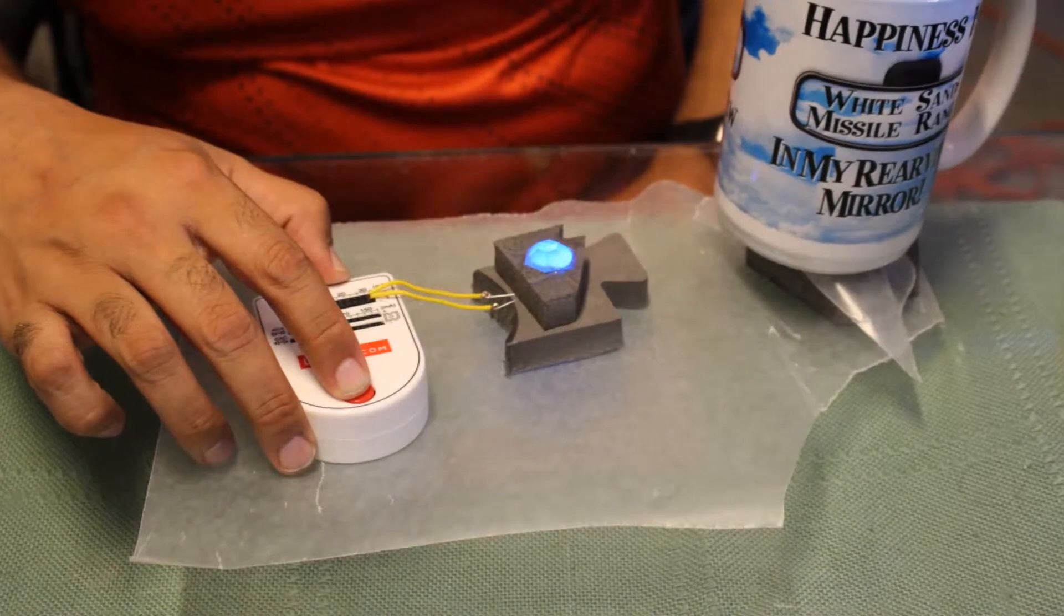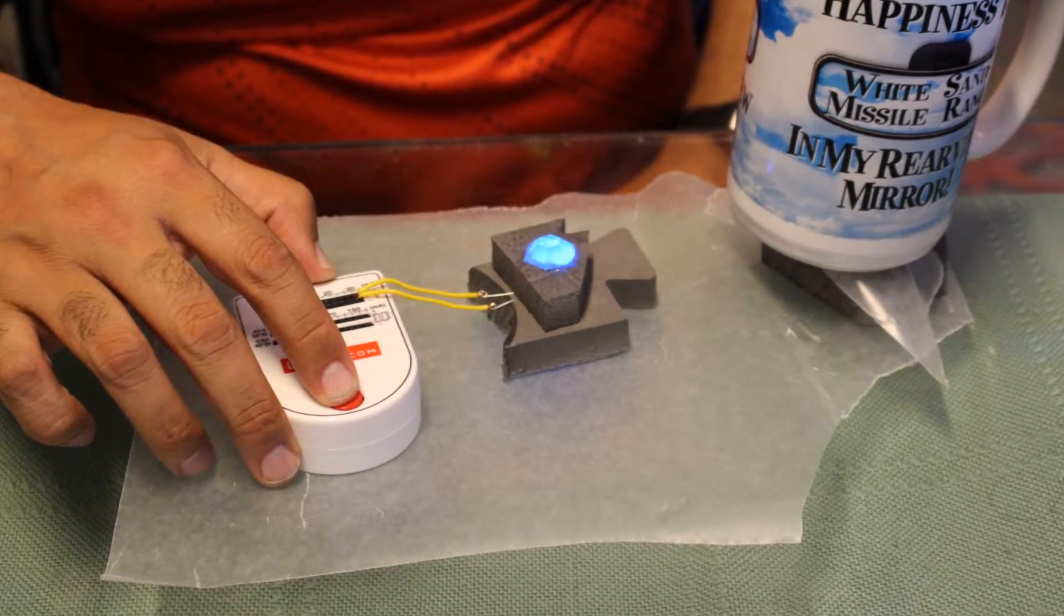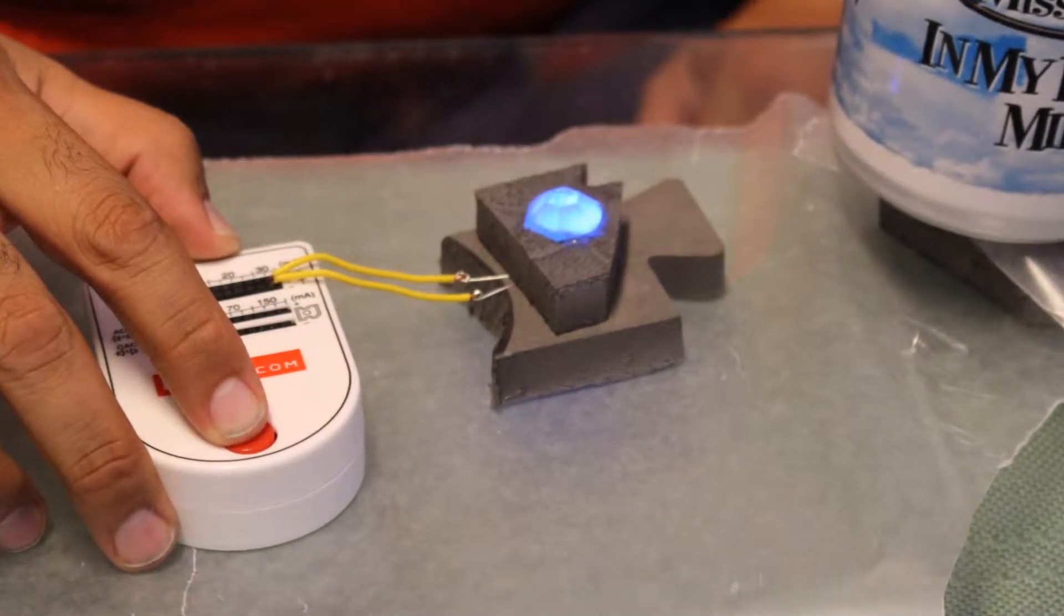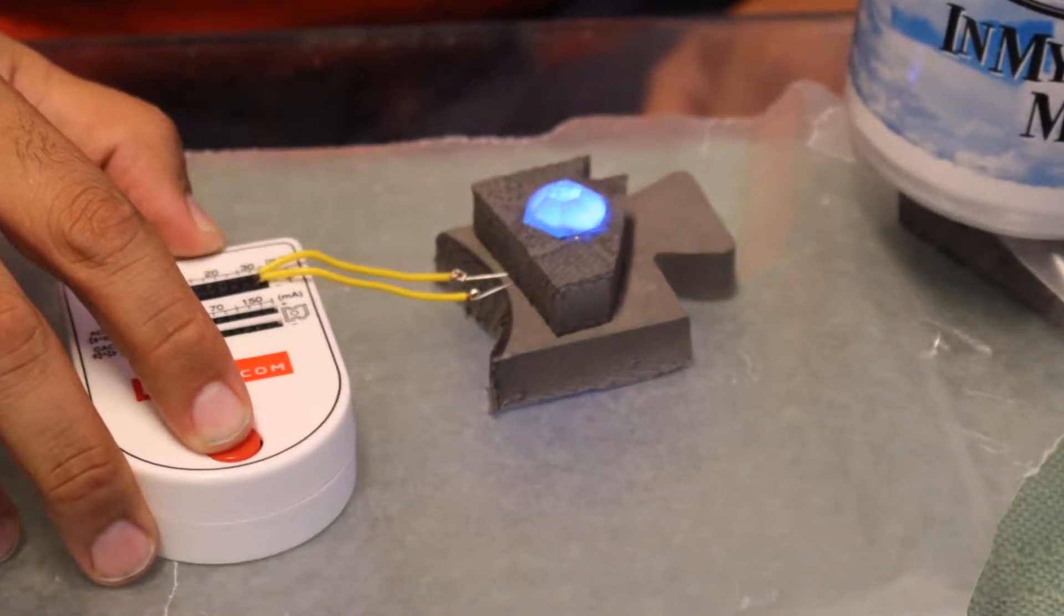So next I add a little bit more hot glue and I push on a gem. Yes, this is one of the gems that I have created for my sword project. As you can see, the gem is illuminated quite nicely.